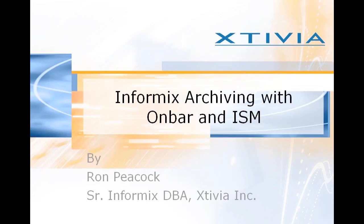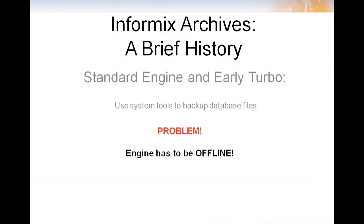Informix, in its early days with the standard engine and early Turbo, used just regular system tools to back up database files — things such as copy, tar, and anything else that would make a copy. The big problem was the engine had to be offline for those to be effective. In the late 80s and early 90s, without the Internet and multi-office systems, engines were small and backing them up wasn't too big of a problem. But with the advent of the Internet, taking an engine offline at any point started to become a major serious issue.